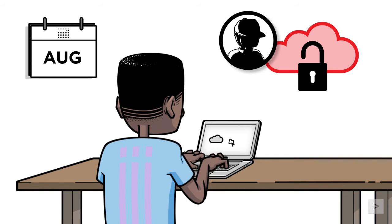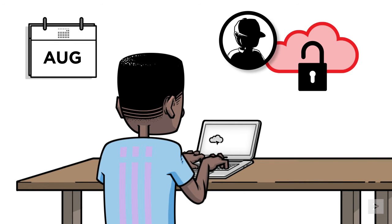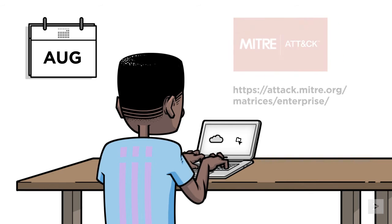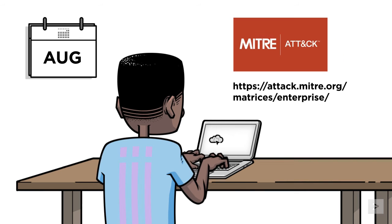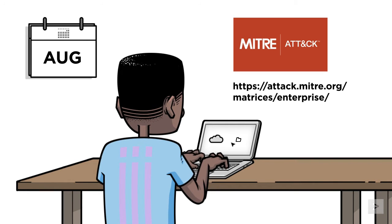We will help Mark figure out how this happened by referencing the tactics and techniques mapped in the MITRE ATT&CK Enterprise Matrix. By doing this, he can take advantage of the additional information it contains to better plan his next steps. Let's begin.